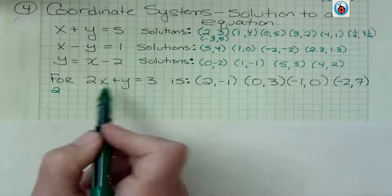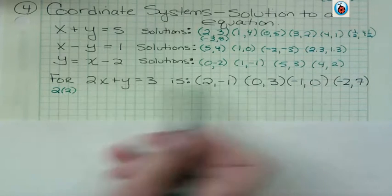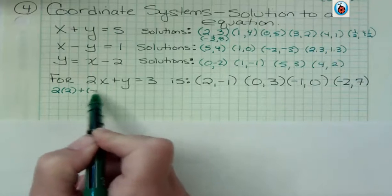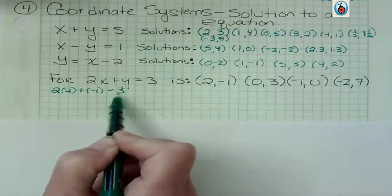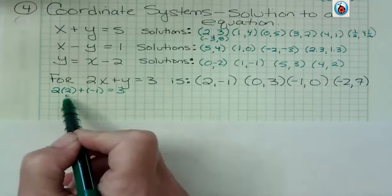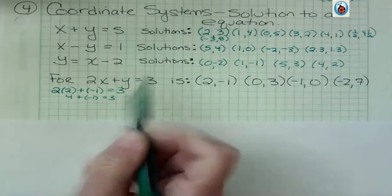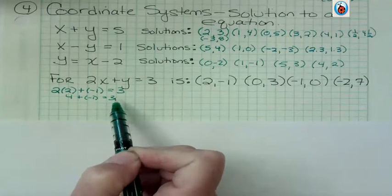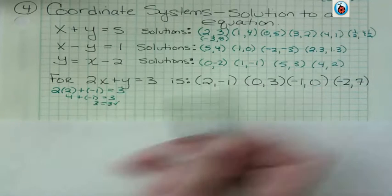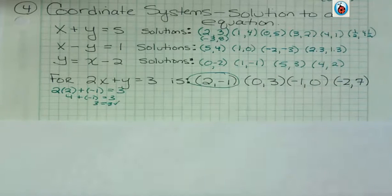x is 2, so I'm going to replace the 2x with 2 times 2. y is negative 1. And I have warned you before to plug in your values, put parentheses around them. It just helps make sense of things. So 2 times 2 is 4, plus negative 1 is 3. 4 and negative 1 is 3. So yes, I'm going to circle this because it is a solution.